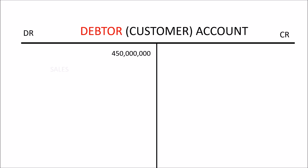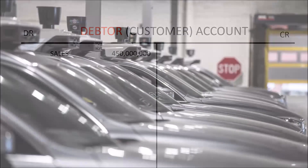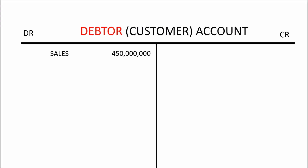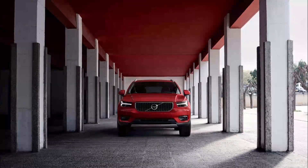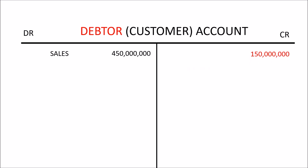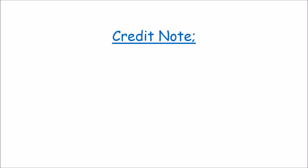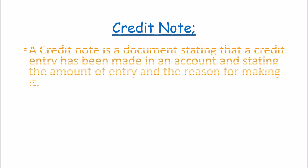If this customer inspects the three cars I supplied and finds fault with one of them, he may want to return it to me. When the customer returns the one car, I'll have to adjust the accounting records. On the customer's records, there is a debit entry of 450 million. Because one car has been returned, I'll reduce the amount by the price of one car — that is 150 million — by crediting his account by 150 million. A credit note is a document stating that a credit entry has been made in an account, stating the amount of the entry and the reason for making it.